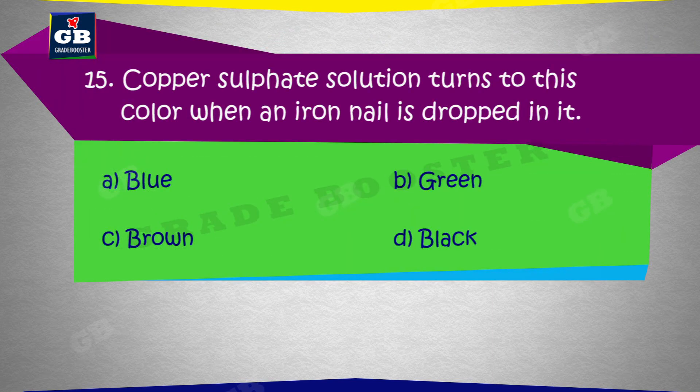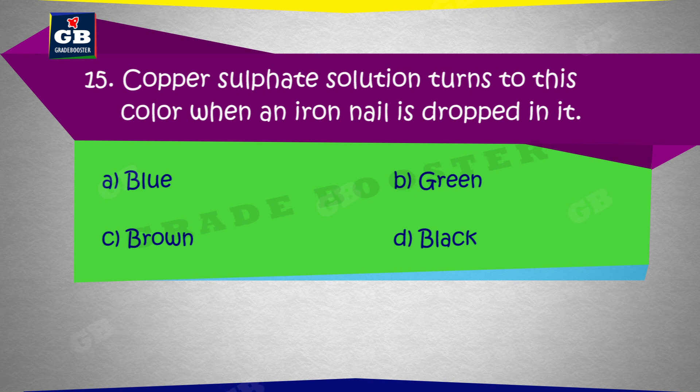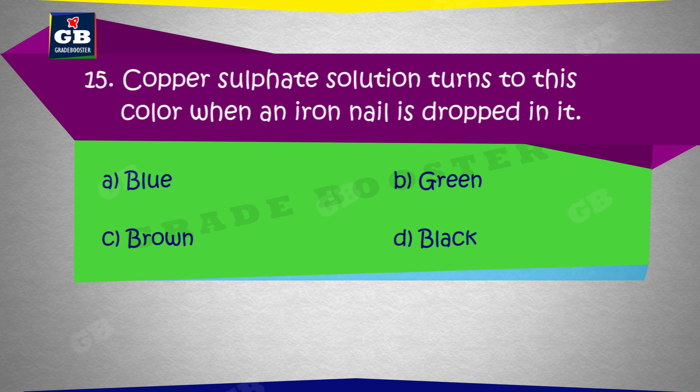Copper Sulfate Solution turns to this color when an iron nail is dropped in it: A. Blue, B. Green, C. Brown, D. Black.